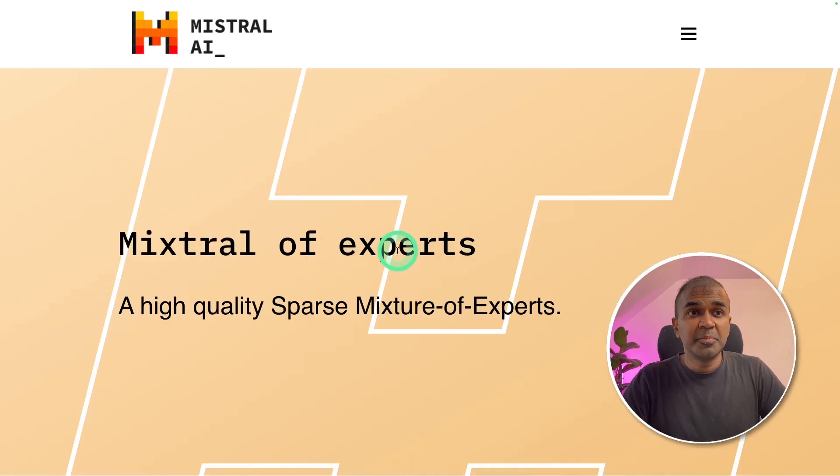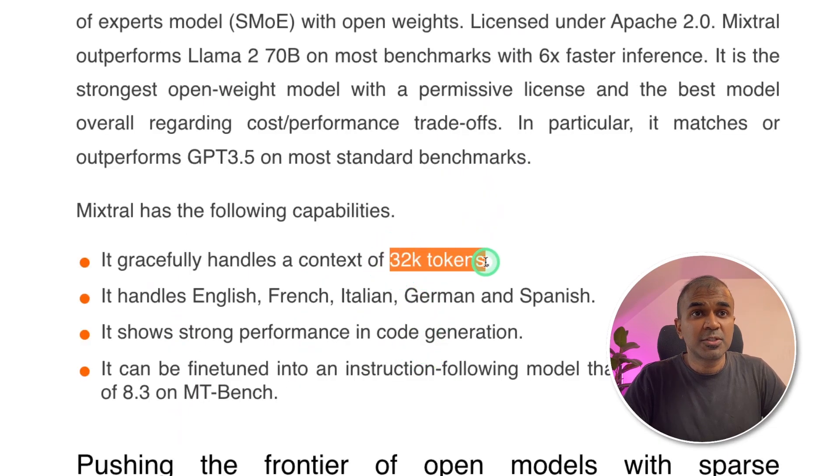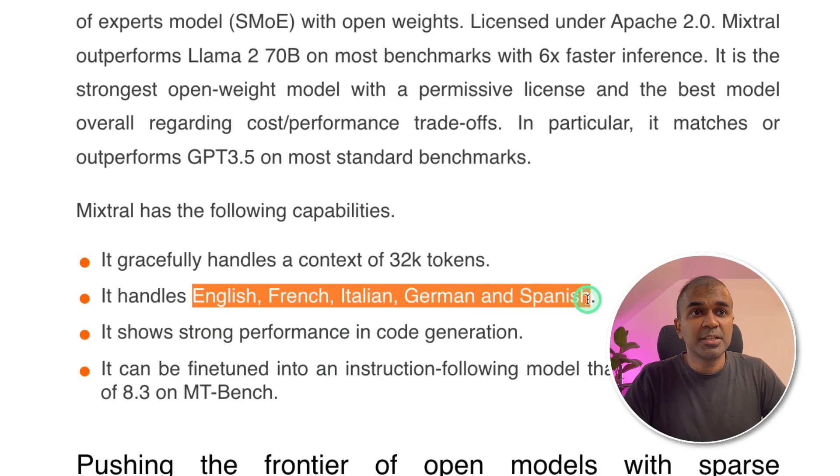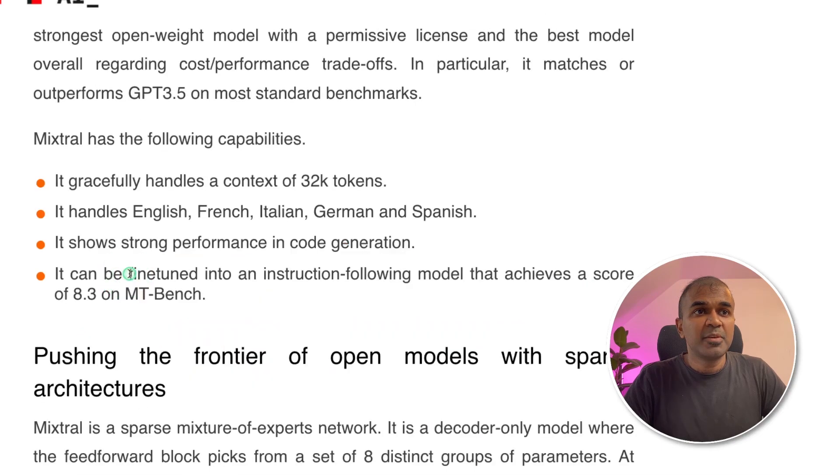So this Mixtral model has the following capabilities. It handles 32,000 tokens. It can handle English, French, Italian, German and Spanish. It shows strong performance in coding generation. It can be fine-tuned in instruction following model and achieves a score of 8.3 on MT-Bench. This is really exciting. A small model which can outperform many different models and high on benchmarks.